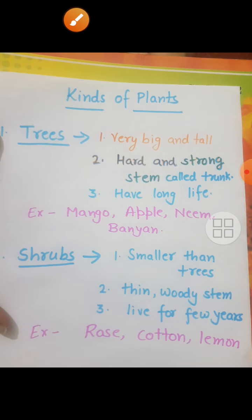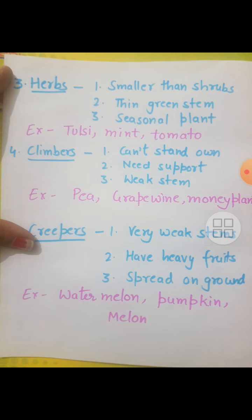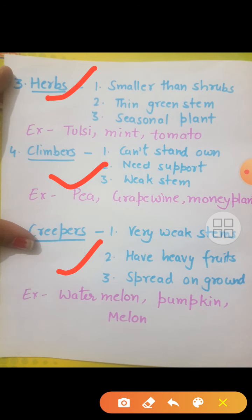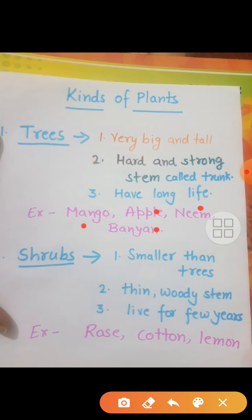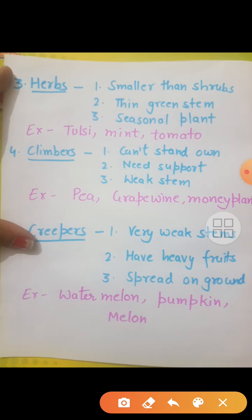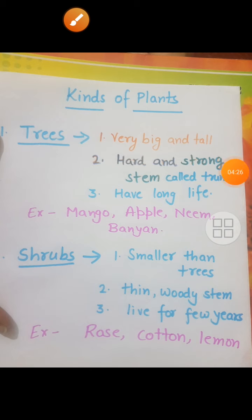So students, today you have learned different kinds of plants. Let's revise it. There are five kinds of plants: trees, shrubs, herbs, climbers, and creepers. Trees: mango, apple, neem, banyan. Shrubs: rose, cotton, lemon. Herbs: tulsi, mint, tomato. Climbers: pea, grapevine, money plant. And creepers: watermelon, pumpkin, and melon. Today you have to do this work in your EVS notebook. Thank you.